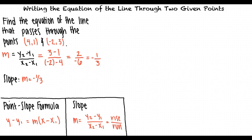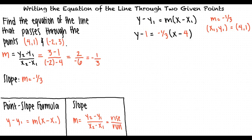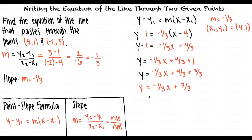From there, we can substitute the slope and one of the points into the point-slope formula. So we'll use m equals negative 1 third and x1 comma y1 equals 4 comma 1 in the point-slope formula. We can now simplify by distributing the negative 1 third to the x and the negative 4, adding 1 to both sides to get the y by itself on the left side, and combining like terms to simplify. This leaves us with y equals negative 1 third x plus 7 thirds, which tells us that the equation of the line that passes through the points 4 comma 1 and negative 2 comma 3 is y equals negative 1 third x plus 7 thirds.